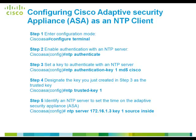Configuring the Cisco Adaptive Security Appliance as an NTP client involves the following steps. The first step is to enter configuration mode using the command configure terminal. The second step is to enable authentication with an NTP server using the command ntp authenticate. The next step is to set a key to authenticate with an NTP server using the command ntp authentication-key. Once a key is set, designate it as a trusted key. The final step is to identify an NTP server using the command ntp server followed by the server address, key, and source interface.